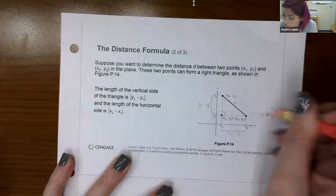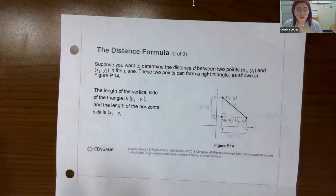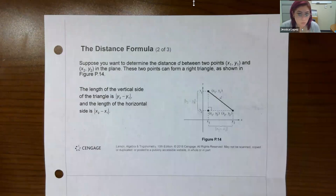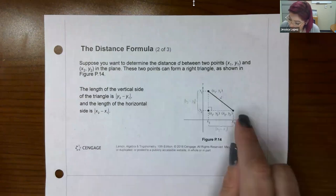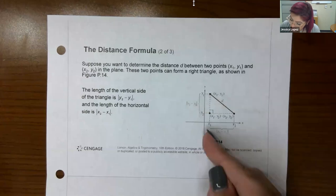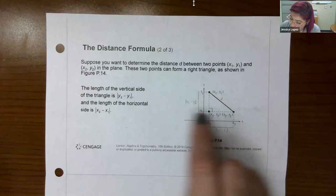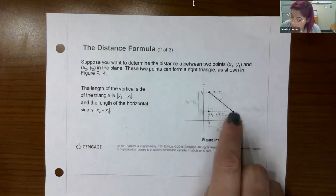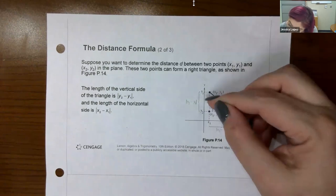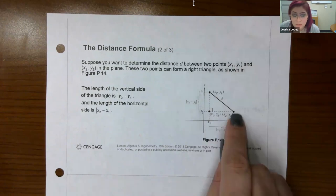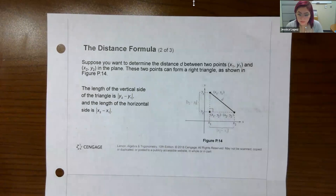We have the distance formula. Suppose you want to determine the distance d between two points (x₁, y₁) and (x₂, y₂). These two points can form a right triangle: draw a vertical dotted line down from one point and a horizontal line across, and where they intersect you get a third point — creating a triangle. You can count how high one side goes and how long the other is. Once you know the length of one side and the other, you can use the Pythagorean theorem to find the length of the hypotenuse — the distance between the two original points.